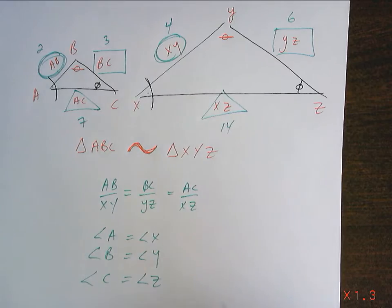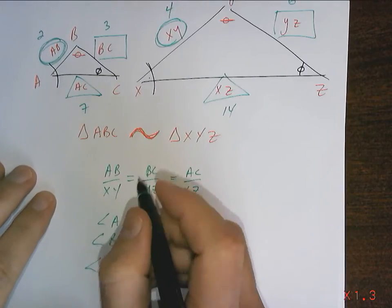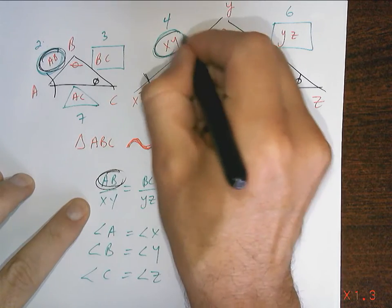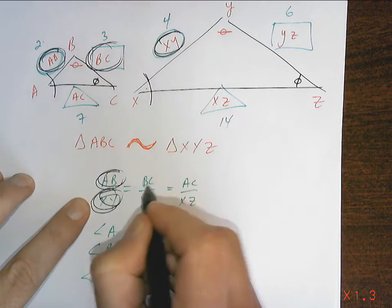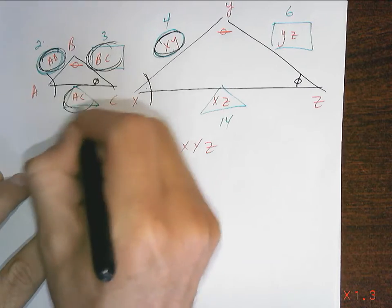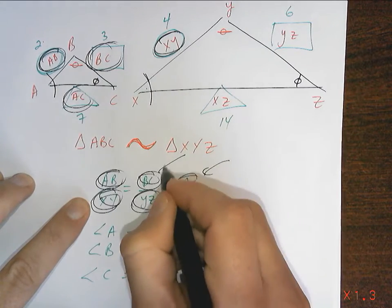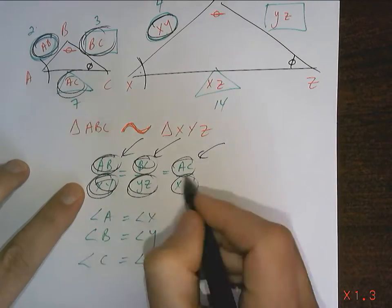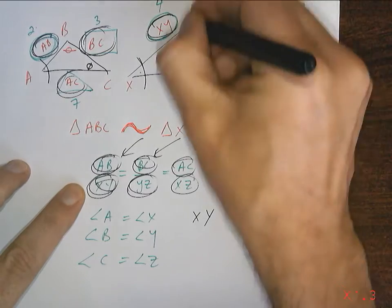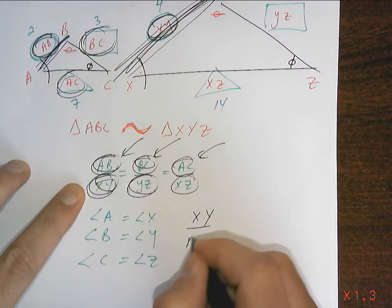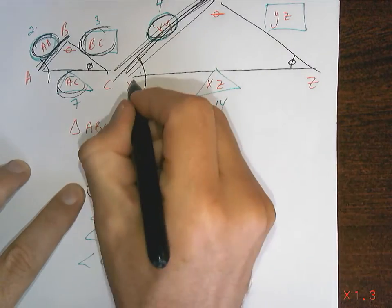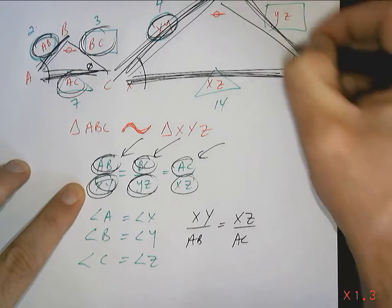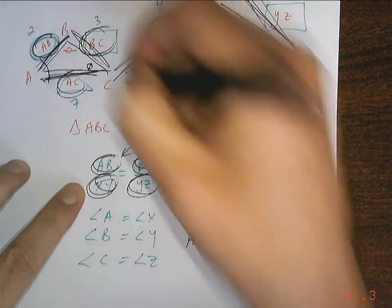If I go the other direction with the ratios, it also works. Notice that when I set up the ratios going from the smaller triangle to the larger, I put AB over XY, BC over YZ, and AC over XZ. All sides from one triangle must be on top and all corresponding sides from the other triangle on the bottom. It's equally valid to flip it: XY over AB equals XZ over AZ equals YZ over BC — the ratio is consistent either way.